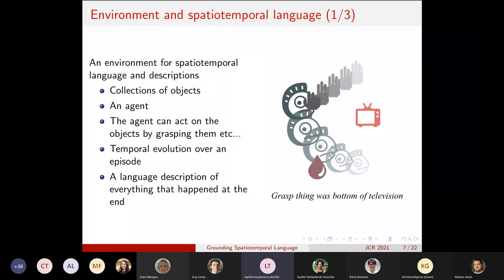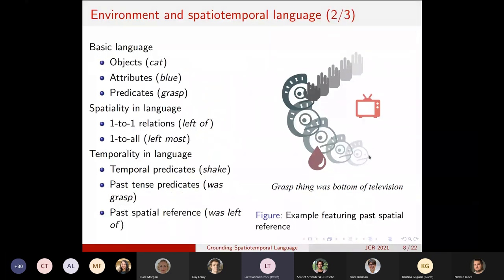And the agents can interact with the different objects by grasping them, moving them around, et cetera. The objects can also interact with each other. For instance, if an animal passes over a source of food or supply, it will grow in size and the plants also. We monitor the temporal evolution of the states of the objects over a whole episode. And at the end of an episode, language descriptions of everything that happens during one episode is generated at the end.